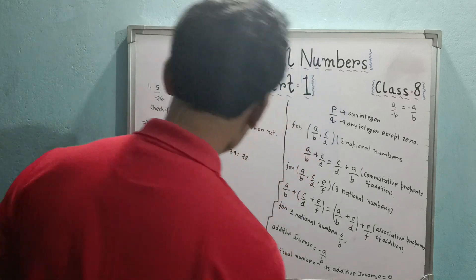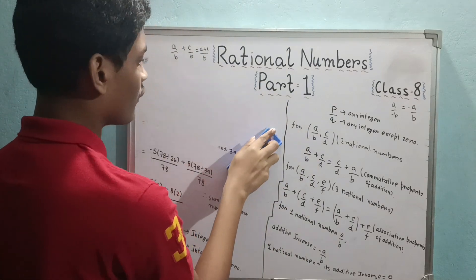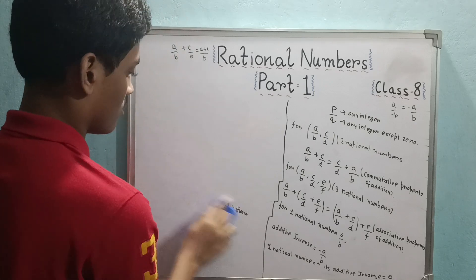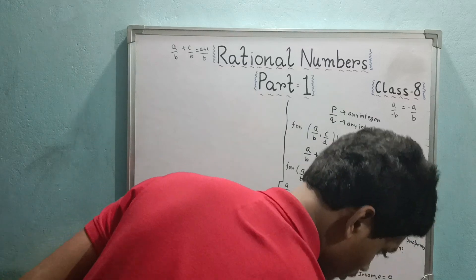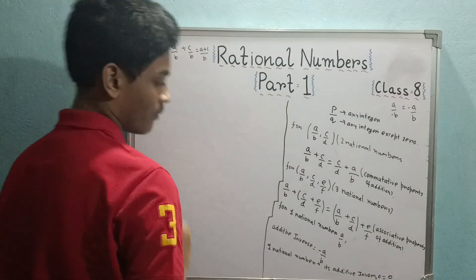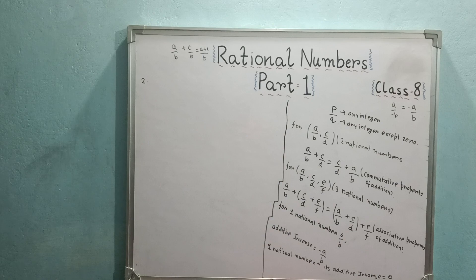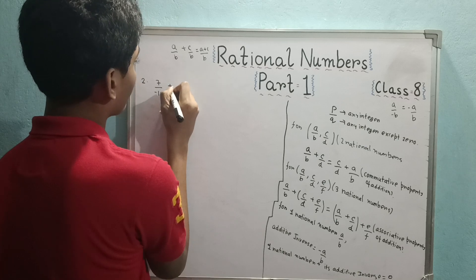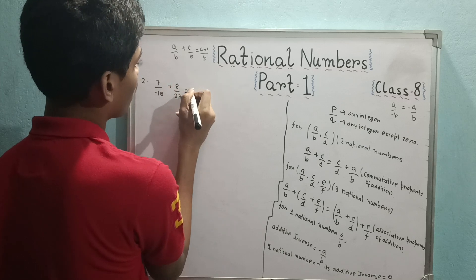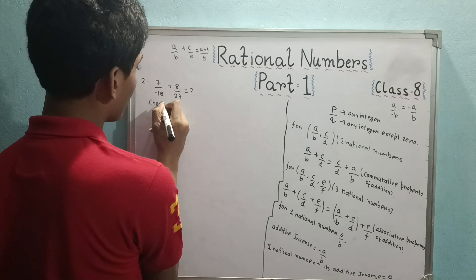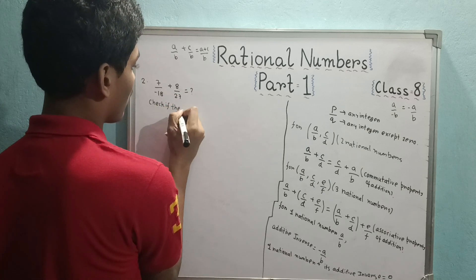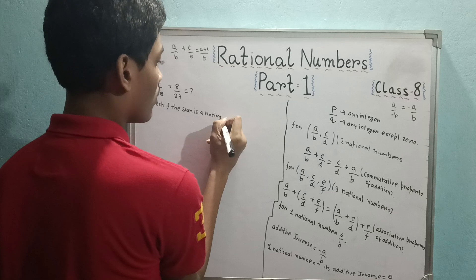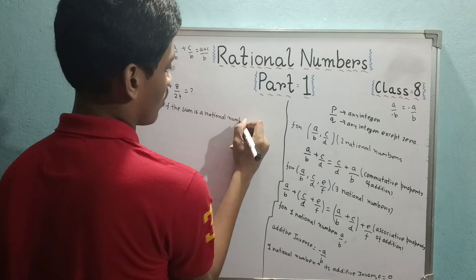Let's solve the next question. Today in the video we are focusing on the concepts of rational numbers and the addition of rational numbers. We will go very slow but steady. Another sum: 7 by minus 18 plus 8 by 27, equals what? Check if the sum is a rational number or not.